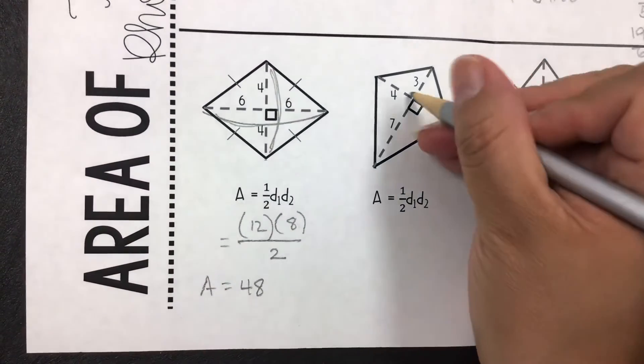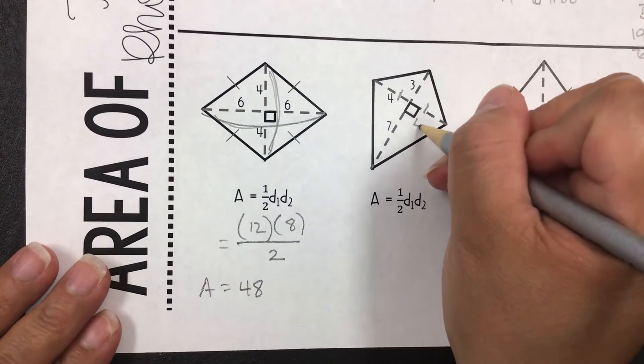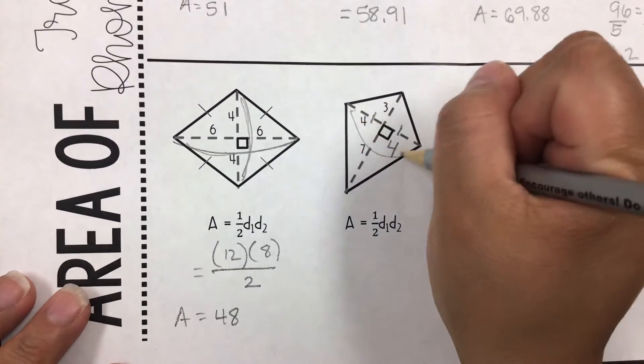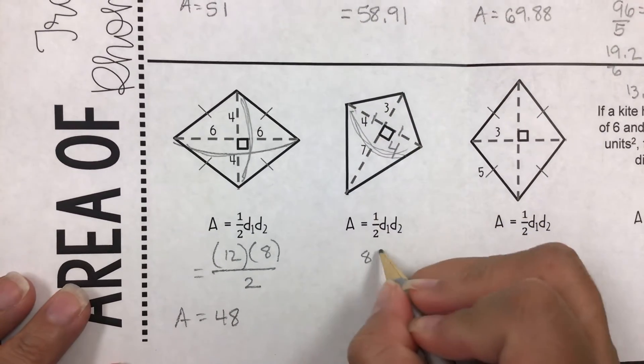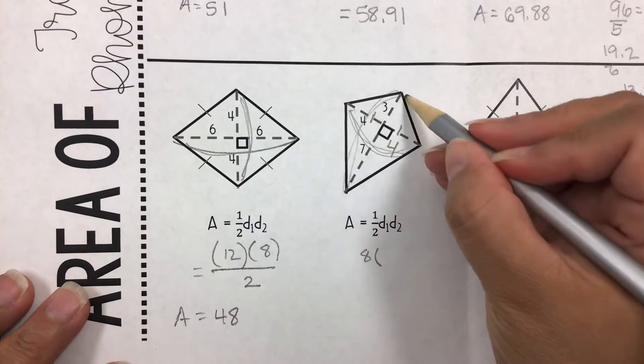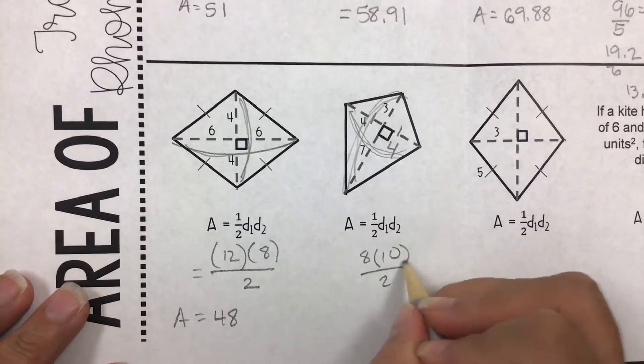And this one, we know that these two are equal to each other. That means this is 4. One diagonal then is 8. The other one is 10. We're going to divide by 2.